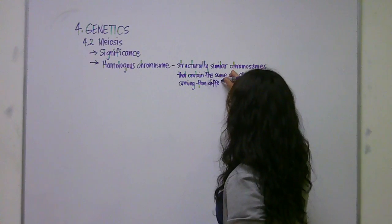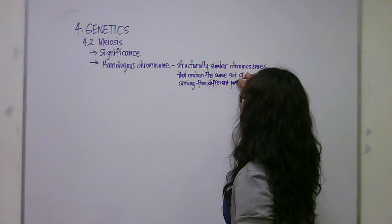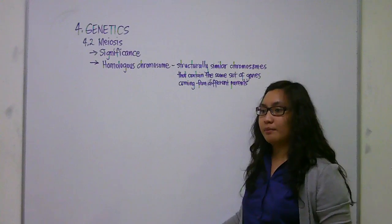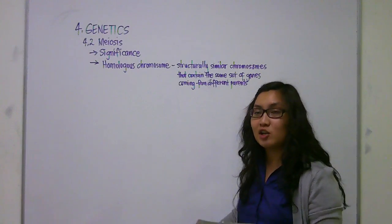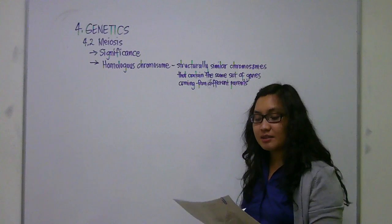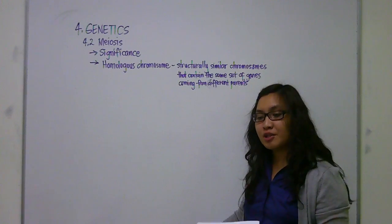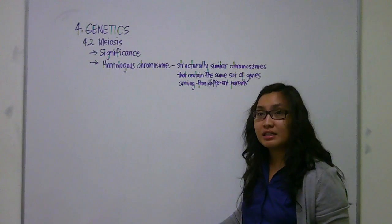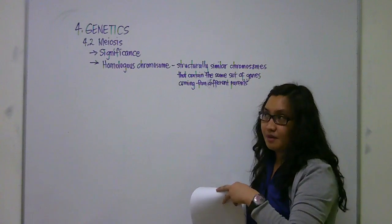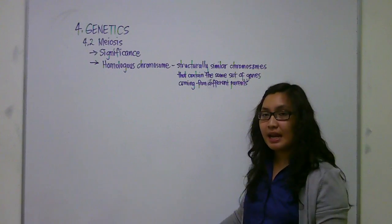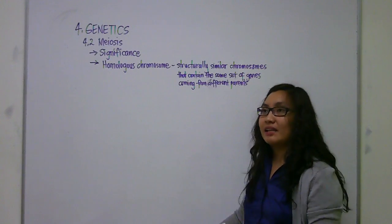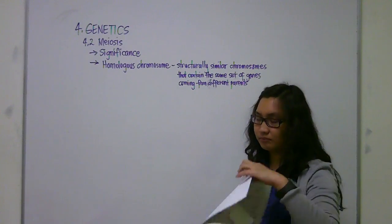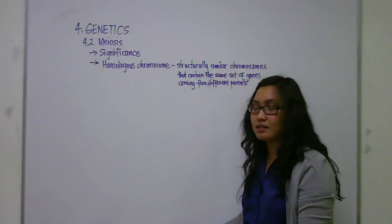We have to reiterate to students that the reason why siblings or all offspring in a family don't look exactly the same as their parents is because whenever homologous chromosomes line up together in the process of meiosis, each and every sperm cell and ovum gets a different set of genes. So whenever they combine in fertilization, they get different sets of genes.